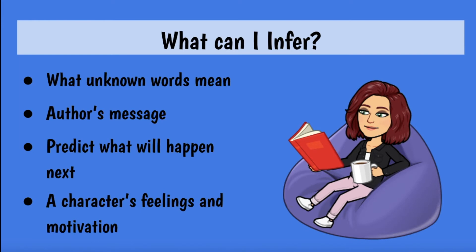The author's message is something they won't always tell you directly — they're not going to say, 'this is what I want you to take away from the story.' You have to infer it. When predicting what will happen next, you look at clues in the story to reach that conclusion. And for a character's feelings and motivations, sometimes characters won't say 'I feel sad' — you have to look at details like their language. Maybe they say, 'this is the worst day ever' — you can probably tell they're upset. Those are all things you can infer in a story.